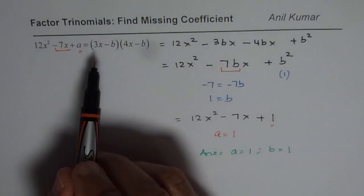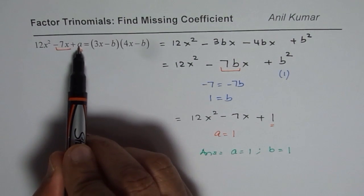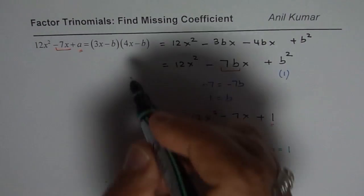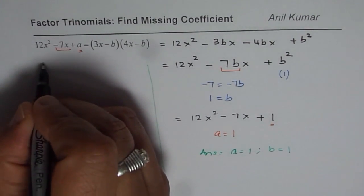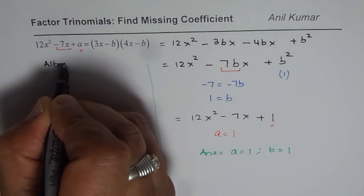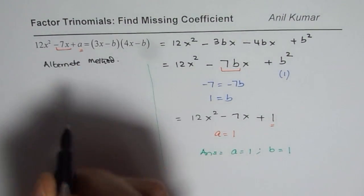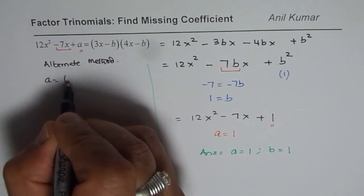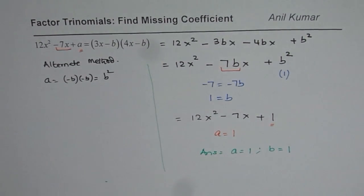This term here is product of the, I mean, a should be equals to minus b times minus b, right? So from the knowledge, what you can do is, you could also do this as an alternate method. So a is basically equals to minus b times minus b, which is indeed b squared. So you get one equation.